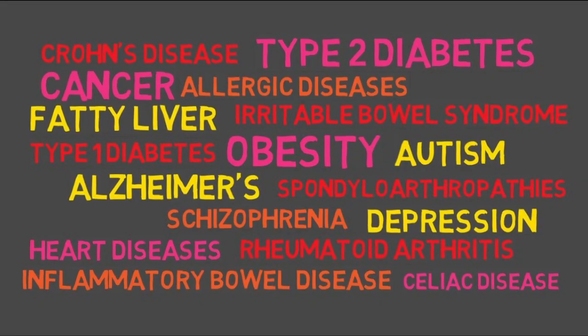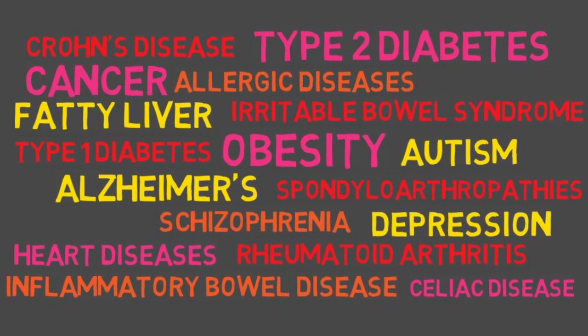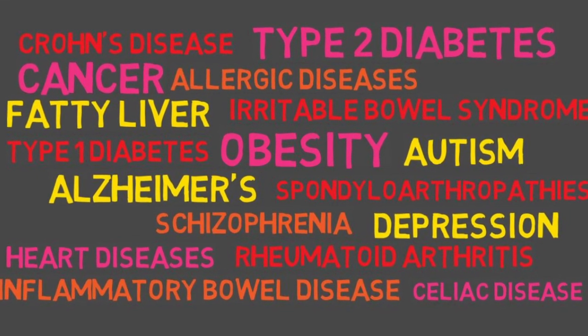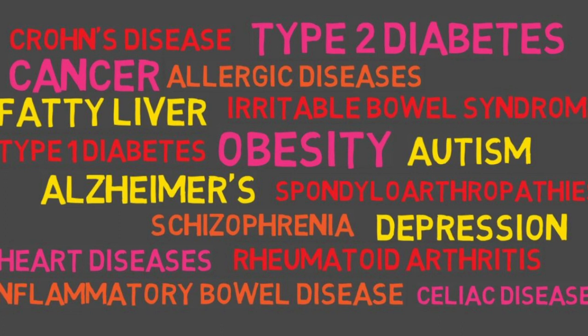Short and acute inflammation is not bad — you want to have it when you, let's say, cut yourself. But it can become very harmful if the cause of the inflammation remains and the inflammation becomes chronic. To give you an idea of what can happen, here is a list of diseases that have been associated with increased intestinal permeability and the subsequent chronic inflammation.